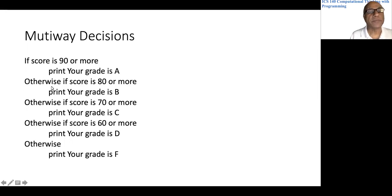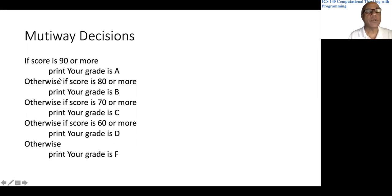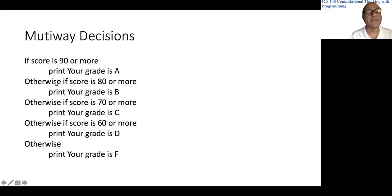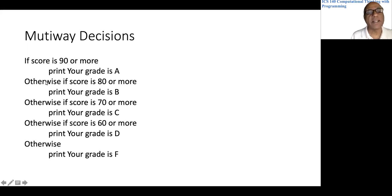Now look at this one. We have an 'otherwise' and immediately an 'if.' These two can be combined in Python. 'Otherwise' in pseudocode is the same as 'else' in Python, and 'if' is the same as 'if' in Python. Else and if are combined to produce what is called 'elif.'